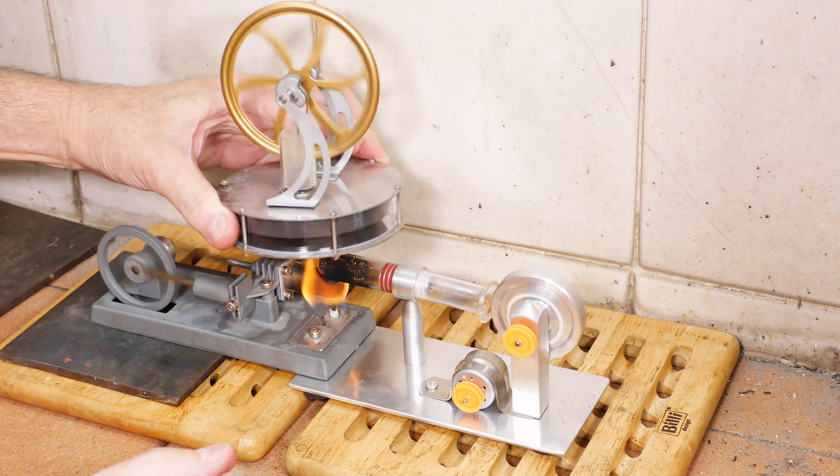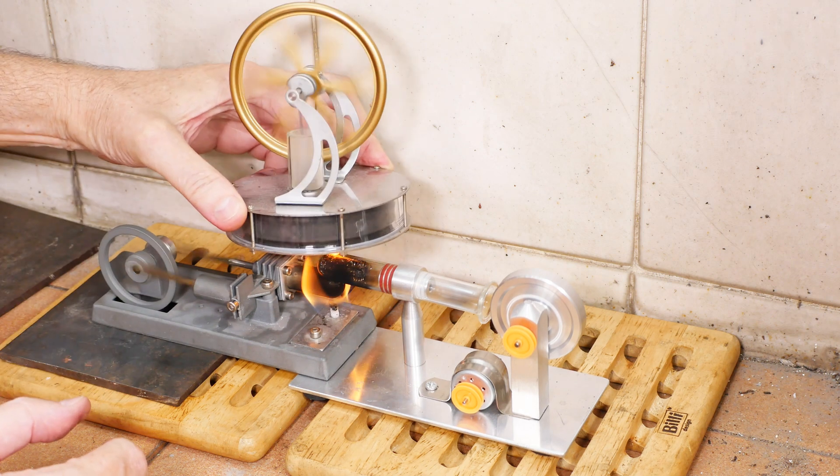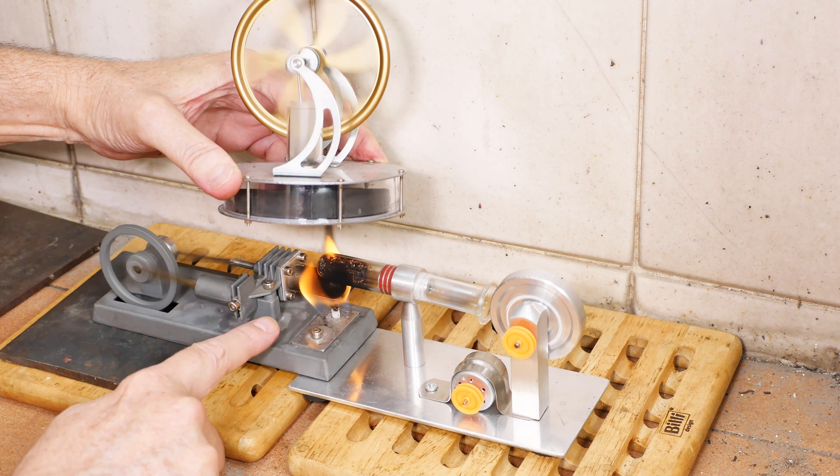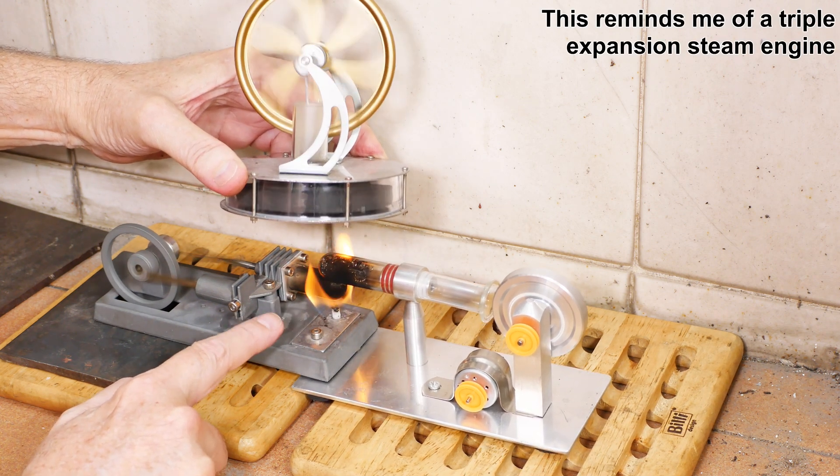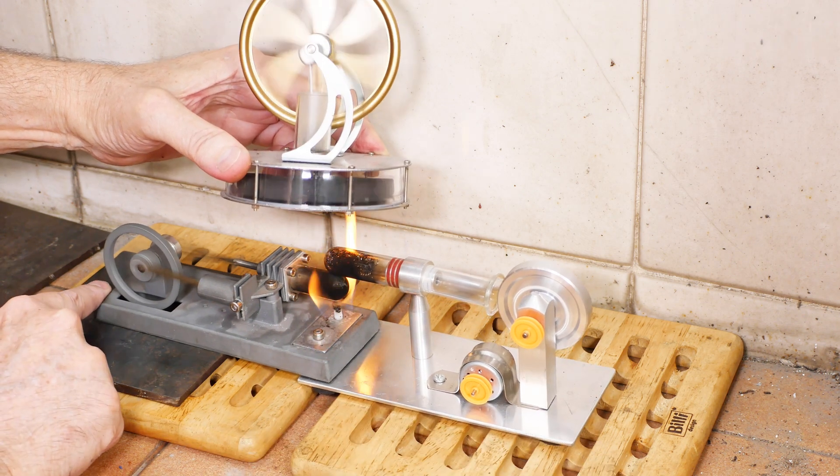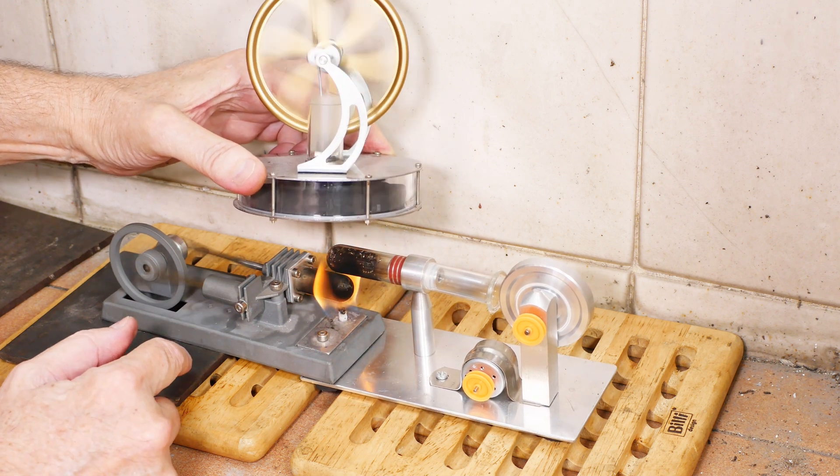As you can see, we're getting roughly two and a half, we'll call this top one a half, two and a half times the power of just operating this one engine. This one likes a big flame. This one does not, it likes to be hot. It is a high temperature Stirling engine.